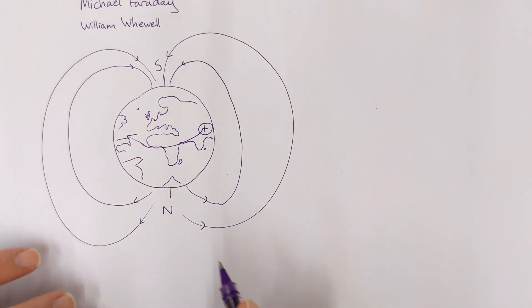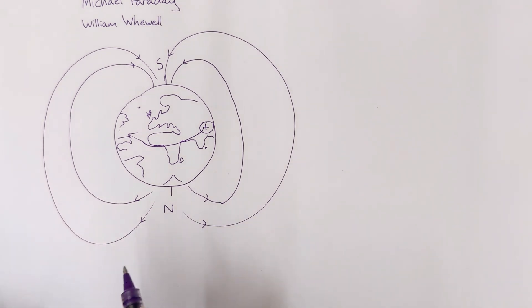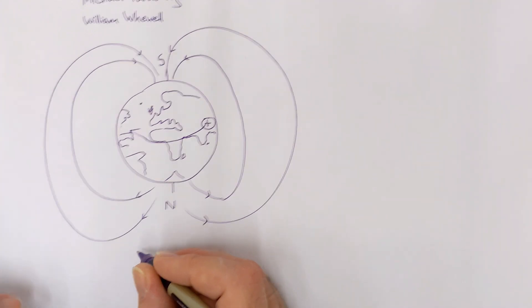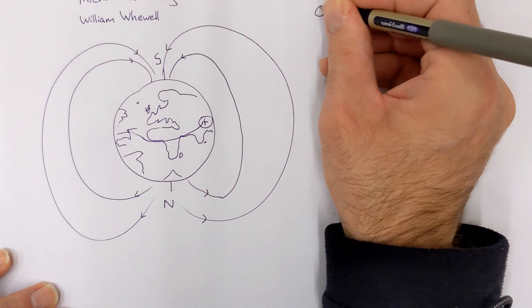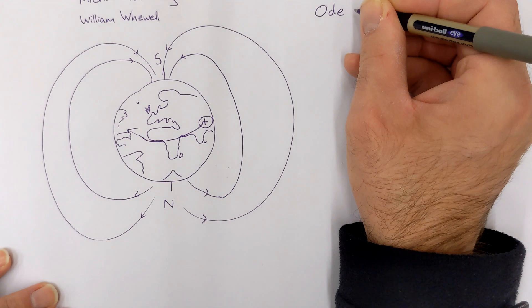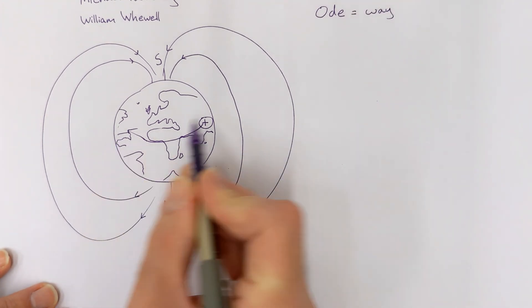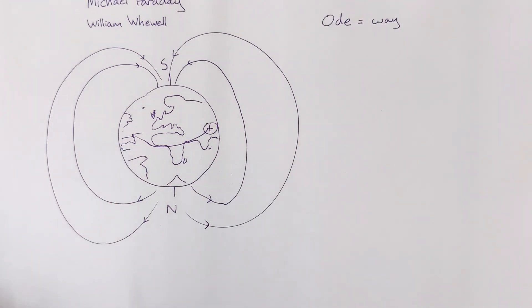So let's break that word down for a second. Where does the ode part come from? The ode part comes from Greek. I'm not going to attempt to pronounce Greek, but effectively the word ode, or the suffix ode, means way. So the east way over here and the west way over here.